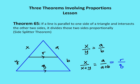First one, Theorem 65, called the Side Splitter Theorem. What it says is if I have a line that's parallel to one side of a triangle — this line here that's parallel to the base of the triangle — and it intersects the other two sides, it's going to divide those two sides proportionally.